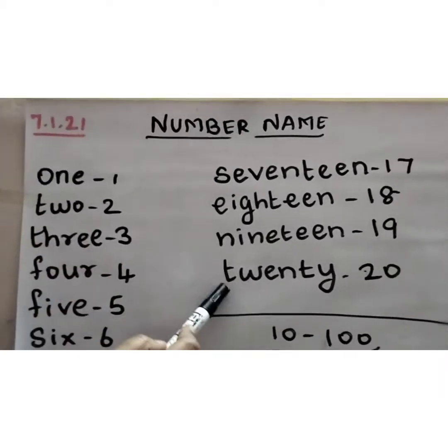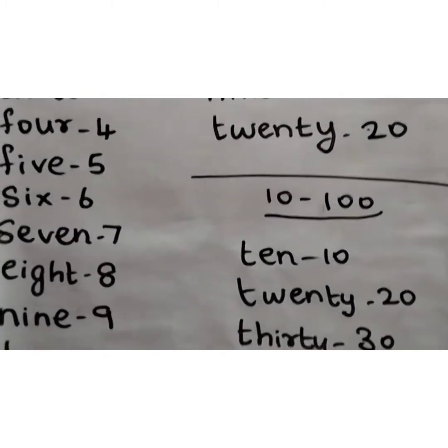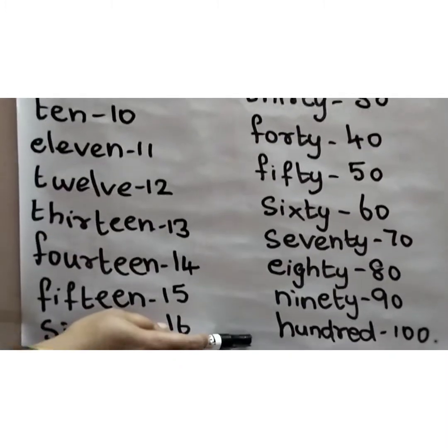I know you already know all these number names but copy this in your classwork. If you are thorough with these spell names, it will be easy for you to write from 51 to 100. Okay, I have written from 1 to 20 first. Then in 10s, 10, 20, 30, 40, 50, 60, 70, 80, 90, 100. Copy this also in your classwork.